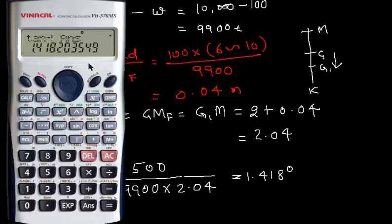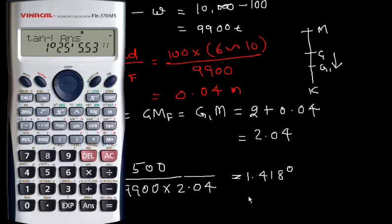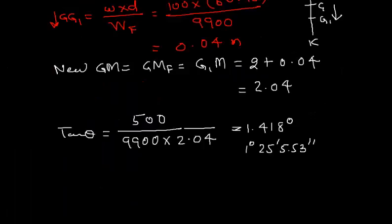Shift and tan inverse is 1.418 degrees. Or if I need to round off in degrees and minutes, 1 degree 25 minutes and 5.53 seconds. Divide this by 60, it rounds off to 0.1. We can write 1 degree 25.1.